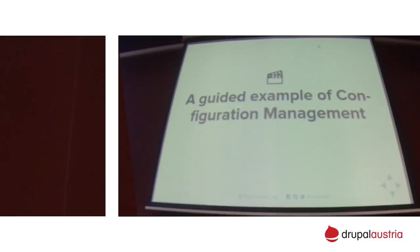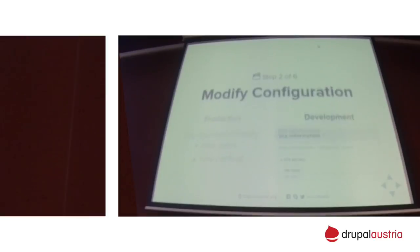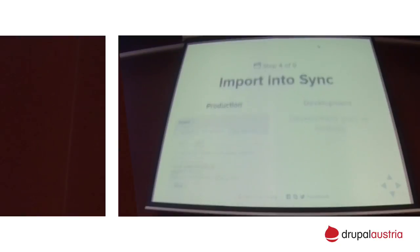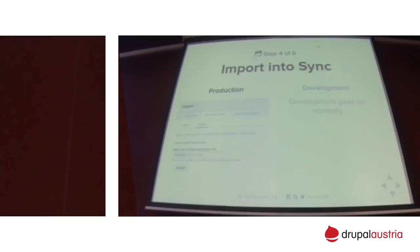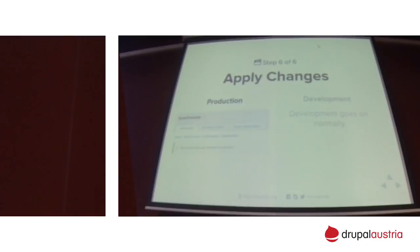A small guided example of how you use it: first you clone the site to your development environment. On production, you do a full install and make a complete backup. On the development site you restore that backup. The live site operates while on the development site you change settings, then export all the settings and download a tarball. On the production site you upload this tarball, see what changed — in this case it was the site name — and then import it, making the configuration live.